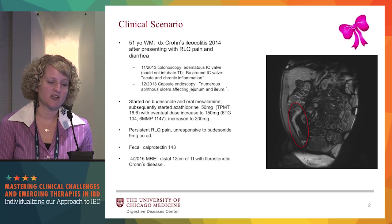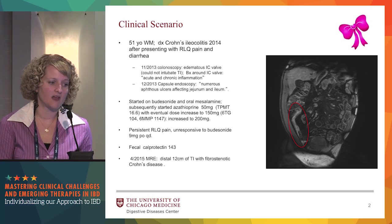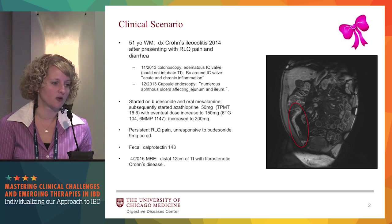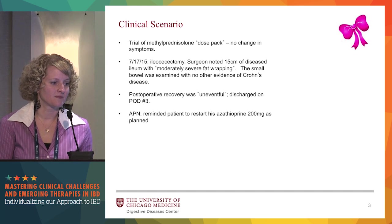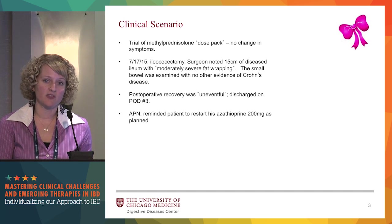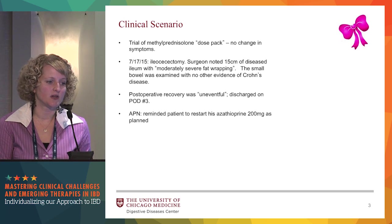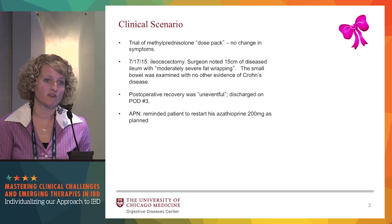His fecal calprotectin was 143. In April of the following year, he underwent an MR enterography which showed 12 centimeters of distal ileum with fibrostenotic Crohn's. He did a trial of a Medrol dose pack without any change in his symptoms, and ultimately in July of that year, he underwent an ileal resection. The surgeon noted a longer segment of diseased ileum with moderately severe fat wrapping.